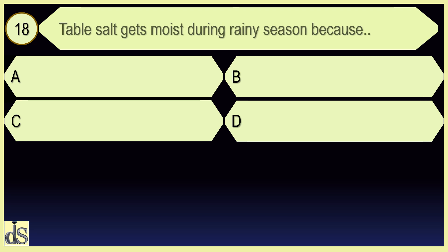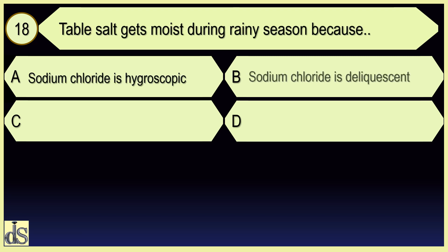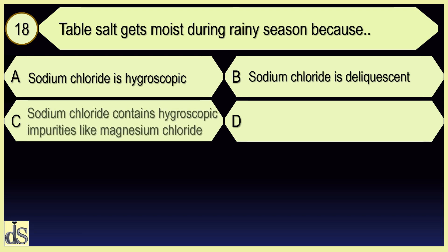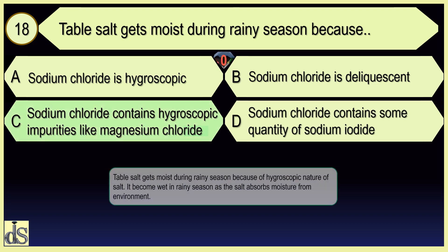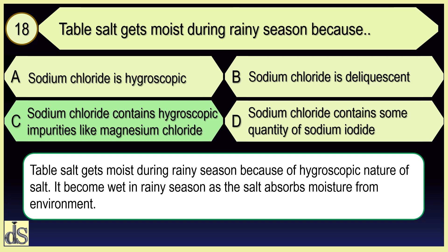Table salt gets moist during rainy season because sodium chloride contains hygroscopic impurities like magnesium chloride.